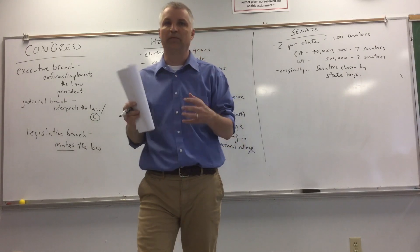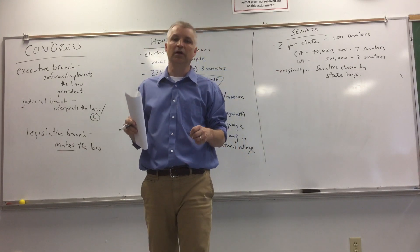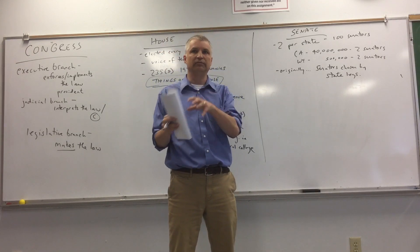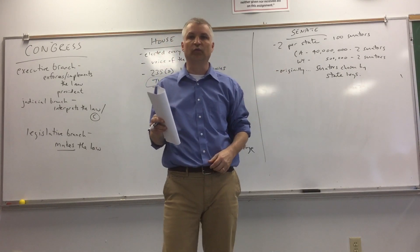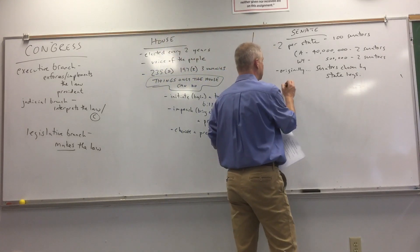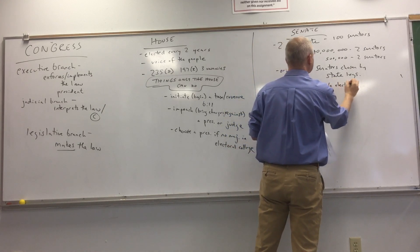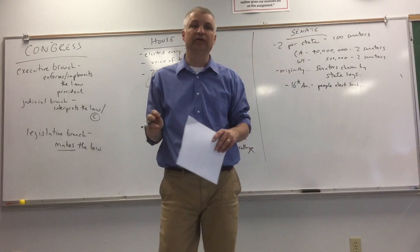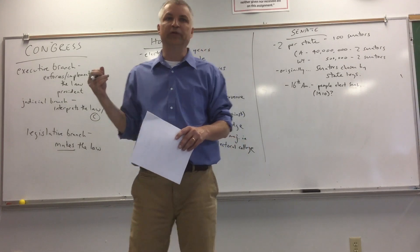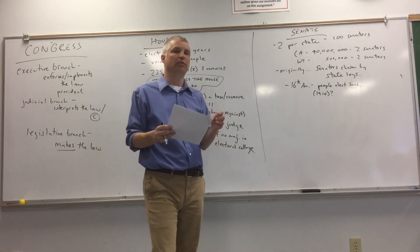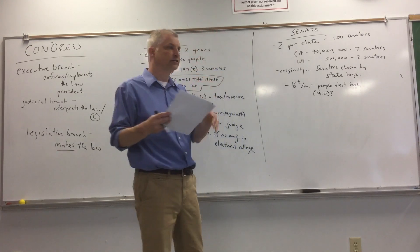When the Constitution was first written and for about 100 to 120 years, senators were chosen not by the people but by the state legislatures. One of the state legislature's jobs was choosing who their two senators would be. That's not true anymore. Now, under the 17th Amendment to the Constitution, passed around 1910–1912, people vote directly for their senators — a way that we've become more democratic over time.